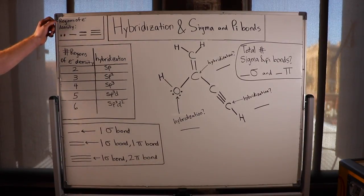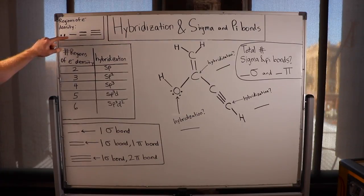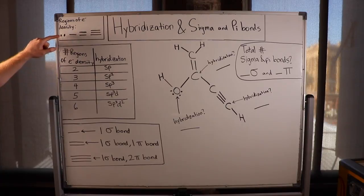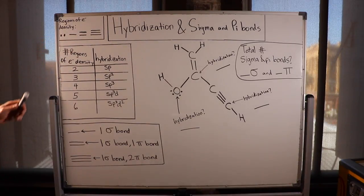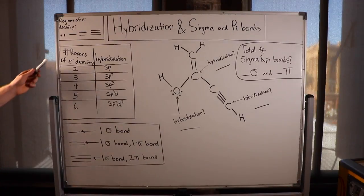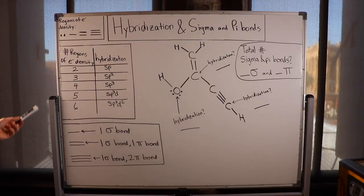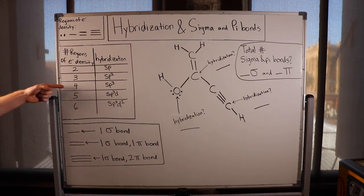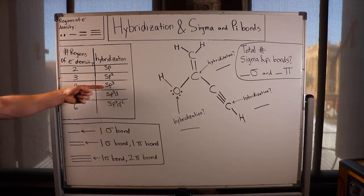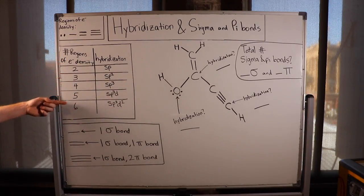The first thing I want you to understand is that a region of electron density is simply a lone pair, a single bond, a double bond, or a triple bond — these are all examples of one region of electron density. The second thing to memorize is that the number of regions of electron density corresponds to a certain hybridization around an atom. For example, if an atom has four regions of electron density surrounding it, its hybridization is sp3. You can memorize the chart that will help you out.